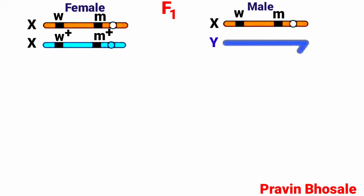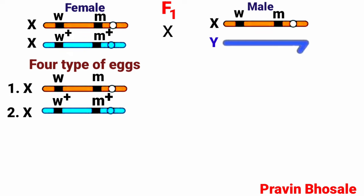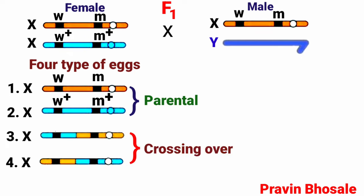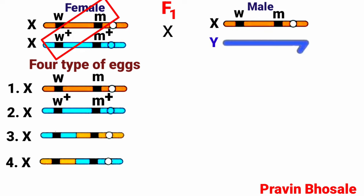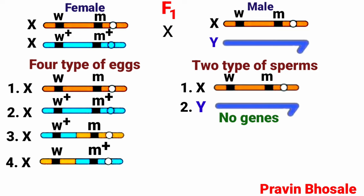If F1 generation individuals are self-crossed, the female will produce four types of eggs. The first X chromosome will have small w and small m, and the second X chromosome will have w plus and m plus — these first two are parental types. The third and fourth are the result of crossing over: one X chromosome will have w plus and m, and another will have w and m plus. The male will produce two types of sperm — one with X chromosome having genes w and m, and one with Y chromosome having no genes for eye color and wing size.